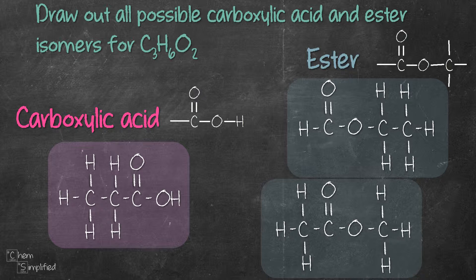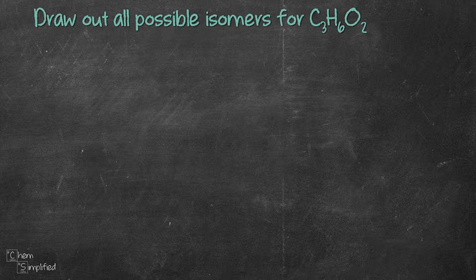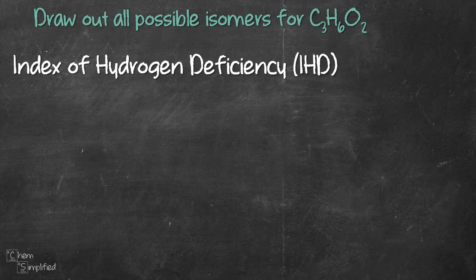In fact, I found 25 more structures in addition to these three here. Before we begin to find all the other isomers, it will be useful for us to know a little bit more about this formula, as in how many rings or pi bonds it can have, and that brings us to calculating IHD for the formula.